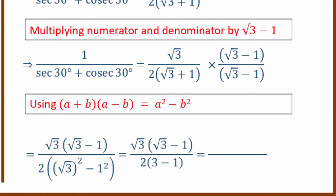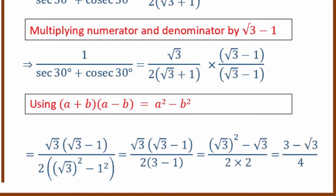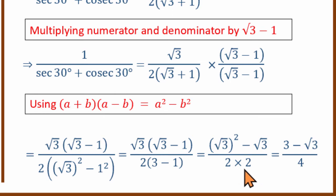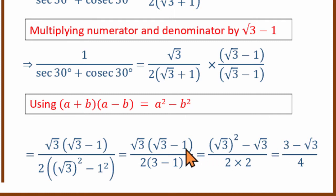We can now simplify the denominator step by step. Root 3 squared is 3, and 1 squared is 1, so 3 minus 1 equals 2. Then 2 multiplied gives 4. In the numerator: root 3 multiplied by root 3 equals 3, and 1 multiplied by root 3 gives root 3. The denominator now has no irrational number or root.